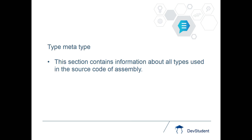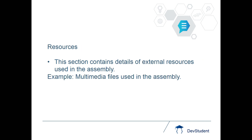The second one is type metadata. It gives information about all the data types and all the types which are used in the source code of that assembly, and it is especially used for memory allocations when that assembly is executed. The final one is resources — if any external resources are used in the assembly, that information will be maintained in resources. For example, if some multimedia files, which are external files used in the assembly, that information will be maintained in the resources.